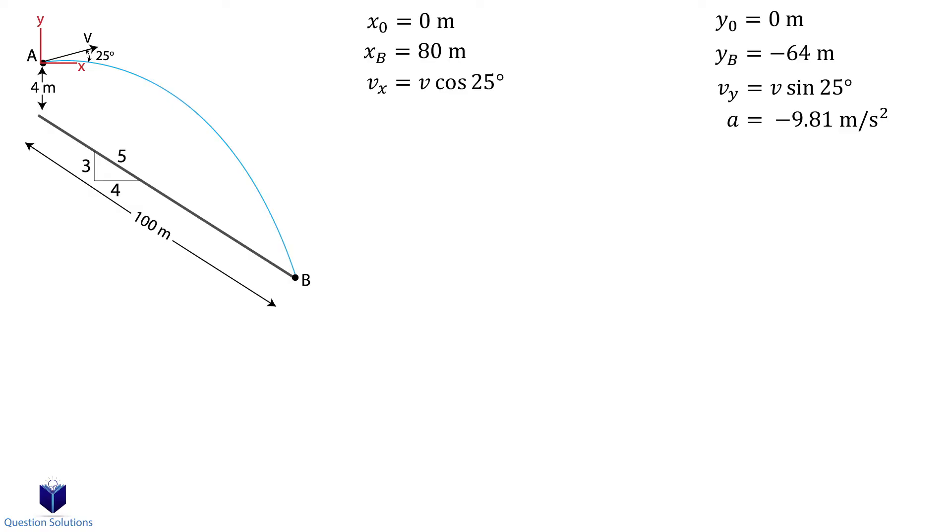We can now write our equations. First, for the horizontal motion. For that, we will use this equation. Substitute what we know. We can isolate for t and then set it aside to write an equation for vertical motion.